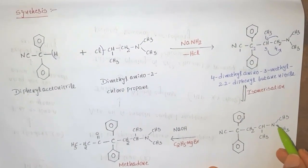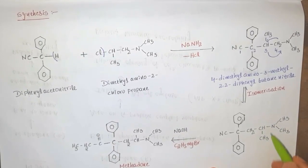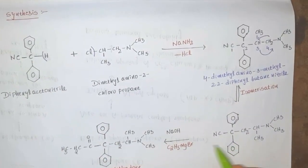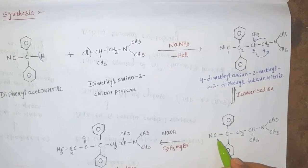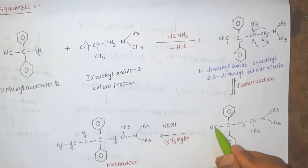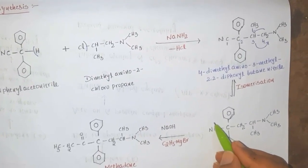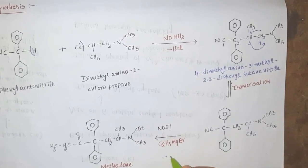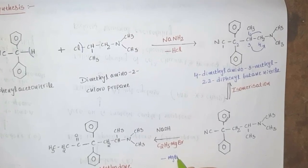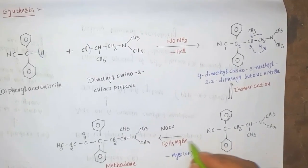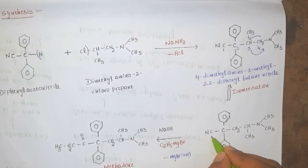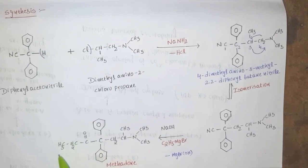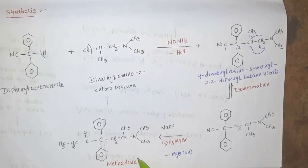This intermediate is called dimethylamino-4-methyl diphenyl butanenitrile. This intermediate undergoes basic hydrolysis: the CN group converts into COOH and ammonia is eliminated. The COOH group then reacts with ethyl magnesium bromide (a Grignard reagent), eliminating MgBr·OH. The C2H5 group is directly attached to C=O, and finally methadone is obtained with a C=O and C2H5 group.